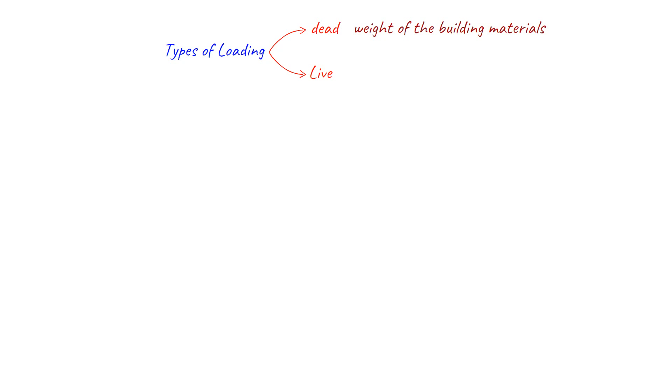On the other hand, live loads are variable loads that are applied to a structure by people, vehicles, or other moving objects. Examples of live loads include people walking on a bridge or vehicles driving on a road.